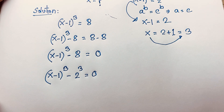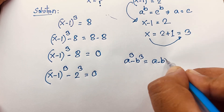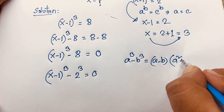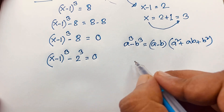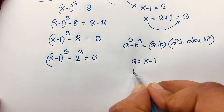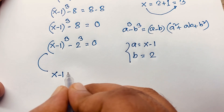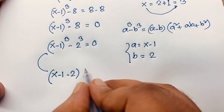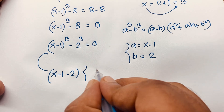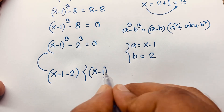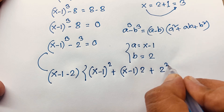Now I apply the identity: a³ minus b³ = (a minus b)(a² + ab + b²). Here a is equal to (x minus 1) and b is equal to 2. So it becomes: (x minus 1 minus 2) times [(x minus 1)² + (x minus 1)(2) + 2²] = 0.